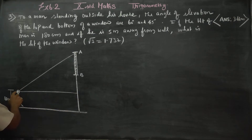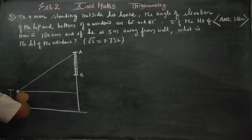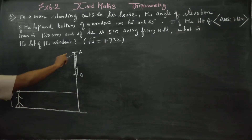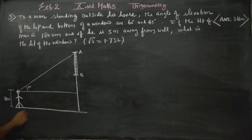The next is the level of eyesight. The angle to the top is 60 degrees and the angle to the bottom is 45 degrees.